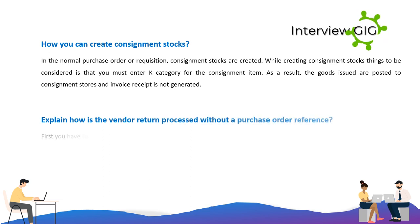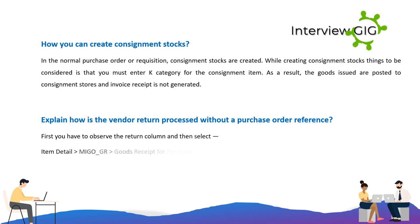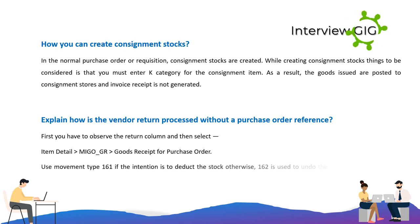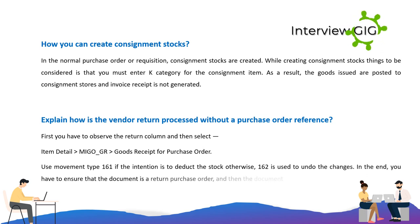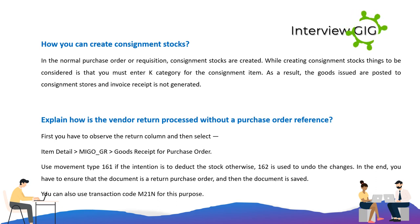How is the vendor return processed without a purchase order reference? First, observe the return column and then select item detail: MIGO_GR goods receipt for purchase order. Use movement type 161 if the intention is to deduct the stock; otherwise, 162 is used to undo the changes. Ensure the document is a return purchase order, then save. You can also use transaction code MIGO for this purpose.